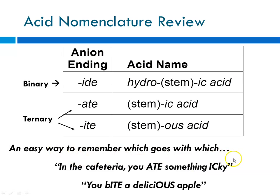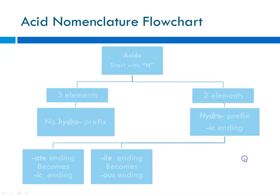And then we learned that for ternary acids, the anion either ends in -ate or -ite. And if the anion ends in -ate, we form the -ic acid, and -ite forms the -ous acid. And we had a saying to remind us how we named the -ate and the -ite acids. An easy way to remember, it goes something like this. In the cafeteria, you ate something icky, or you bite something delicious.